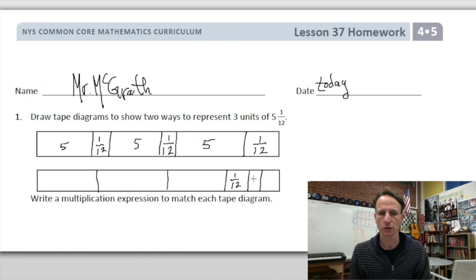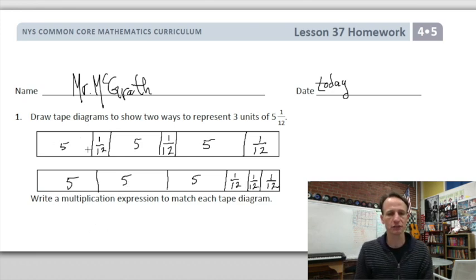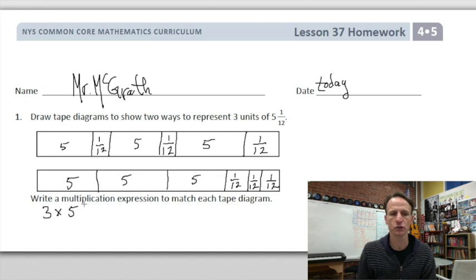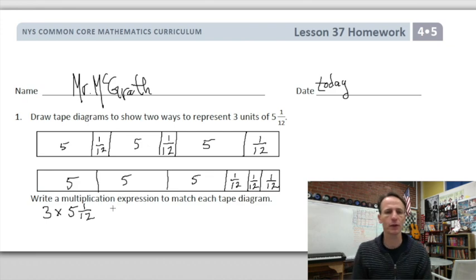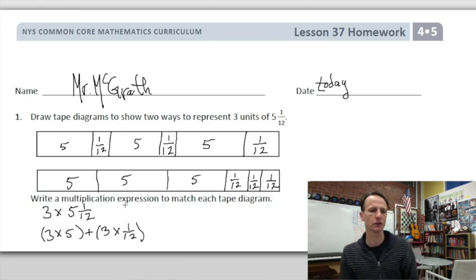And then our twelfths all together. So this is one-twelfth, one-twelfth, one-twelfth, and then we have five, five, and five. Now to write the multiplication expressions here, in this first one we're simply doing three times five and one-twelfth, right? And the way we're breaking that out is, well let's look at the second one here. We're saying hey, we can do three times five, and then we have three times one-twelfth.